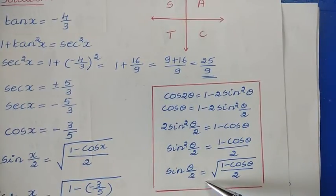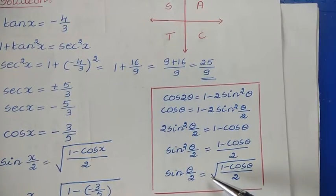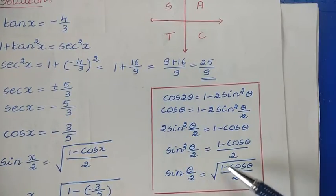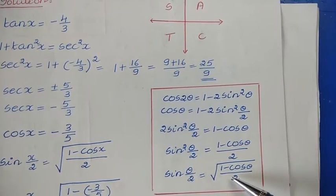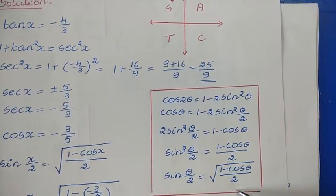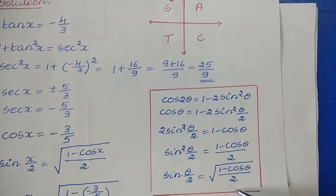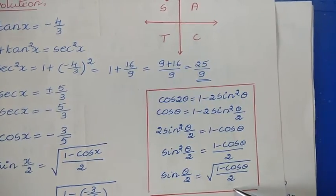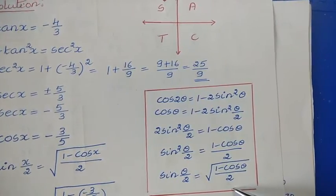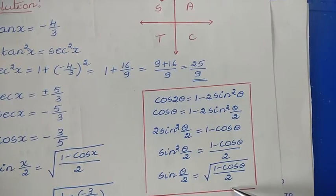In the same way, to find cos(θ/2), you can use the formula cos(θ/2) = √((1 + cos θ)/2). Once you find cos(θ/2) and sin(θ/2), you can easily find tan(θ/2).